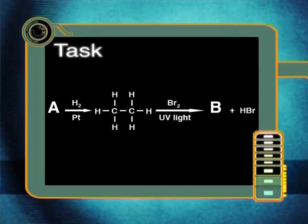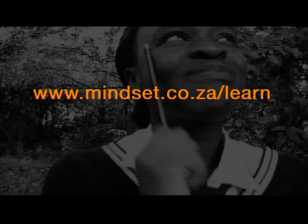That's all we have time for in this episode on reactions of organic molecules. Be sure to join us for the next lesson where we'll look at elimination reactions. Try this task about the two reactions we've learned about today — fill in the missing molecules in the diagram. Look at the type of reaction in each case to identify the missing molecule. For more information on organic molecules and related topics, please visit our website at www.mindset.co.za/learn.